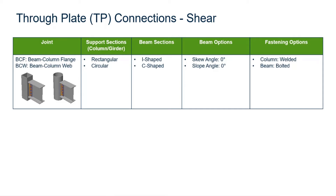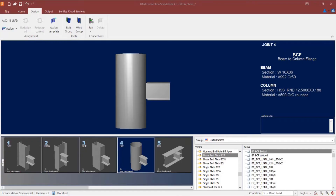In this particular video we are going to be focusing on the workflow for assigning a through plate connection to a beam-to-column joint for the purposes of resisting a shear reaction. We will now turn our attention to our sample model in RAM Connection Standalone, and I'm going to be assigning a through plate connection to the currently selected joint.